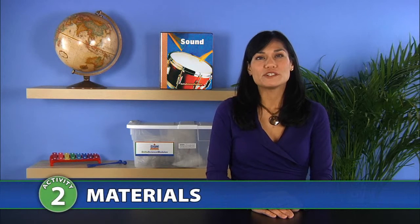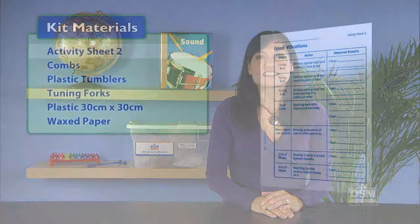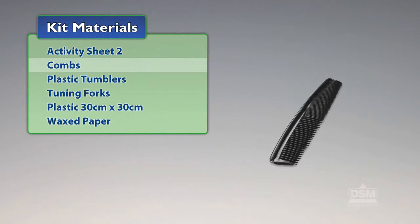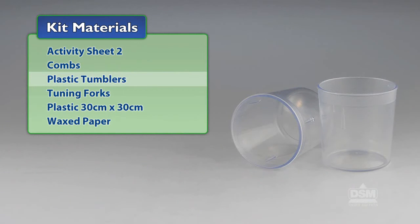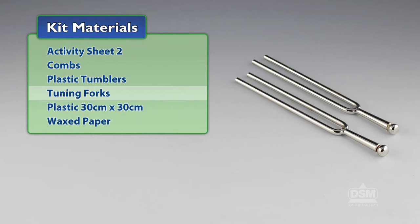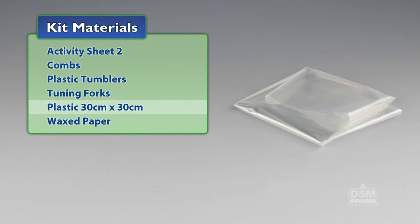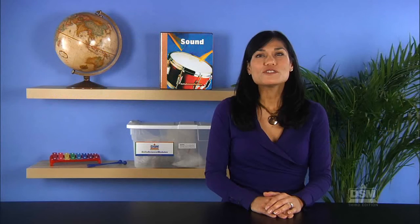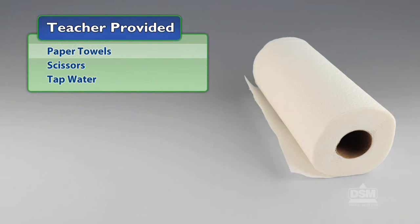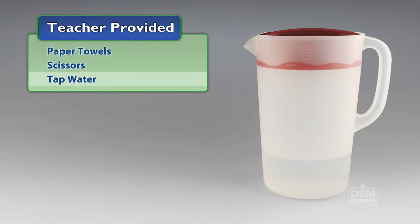You will need the following materials from the kit: Activity Sheet 2, combs, plastic tumblers, tuning forks, plastic 30 centimeters by 30 centimeters, and waxed paper. You will also need to provide paper towels, scissors, and tap water.